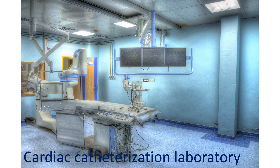The ASD device is folded like an umbrella and introduced into the heart using a tube known as a catheter. The ASD device has two disks like a clamshell — one for the left side of the defect and another for the right side, with a small connection link in between.